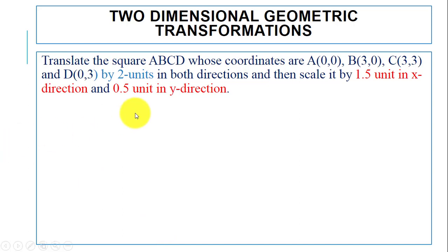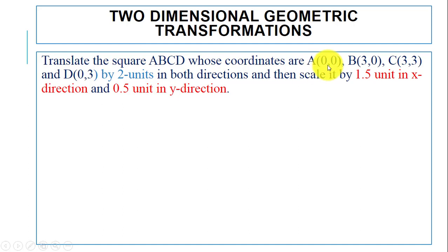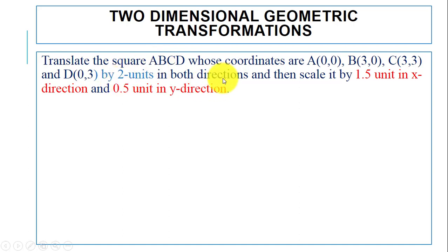First we have to translate a square. We have a square ABCD where the coordinates are: A(0,0), B(3,0), C(3,3), and D(0,3). We will translate this square by two units in both directions — that is in the x and y directions.